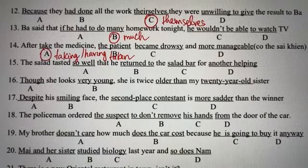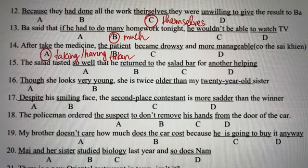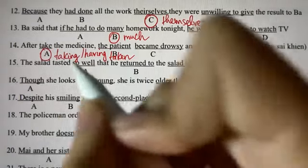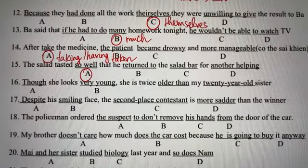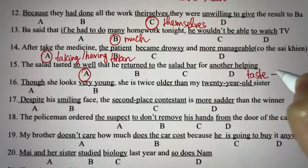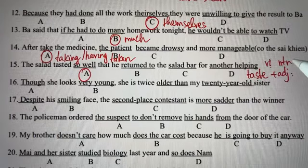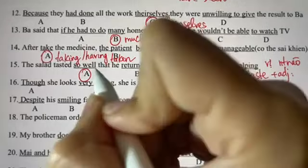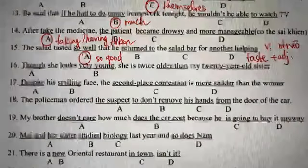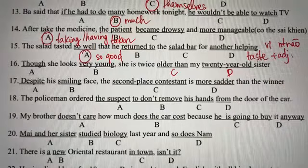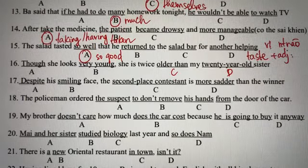Câu số 15: chọn đáp án A vì có từ 'taste' — sau linking verb chúng ta cần tính từ. Câu có nghĩa là nếm rất ngon — 'taste so good'. Dùng từ 'good' ở đây, không dùng trạng từ 'well'.